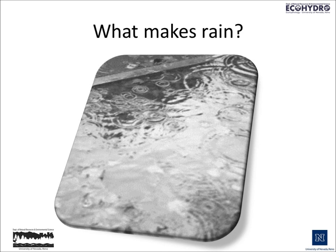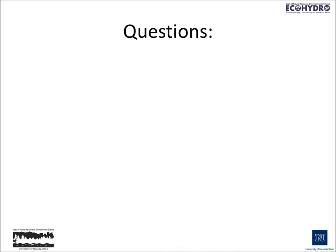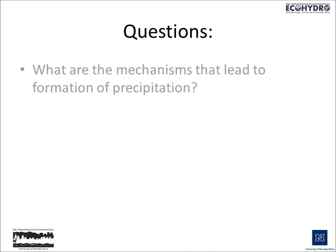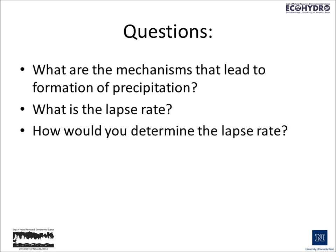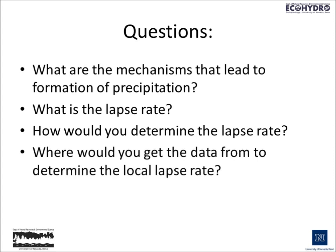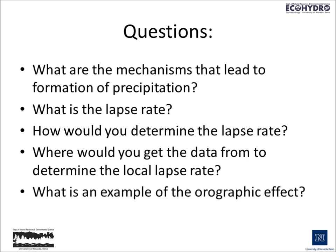The question is: what makes it rain? Here are a few questions that go along with this. What are the mechanisms that lead to formation of precipitation? What do we mean when we talk about a lapse rate? How would you go about determining the lapse rate? Where would you get the data to determine the local lapse rate? And what's an example of the orographic effect?